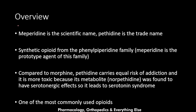An overview of meperidine: meperidine is the scientific name of the drug, pethidine is the trade name, and these names will be used interchangeably. It is a synthetic opioid from the phenylpiperidine family, and meperidine is the prototype agent of this family, which is why it is sometimes called the meperidine family.